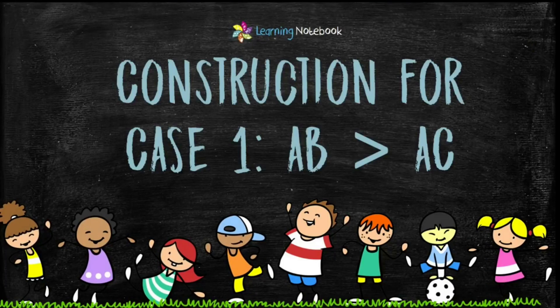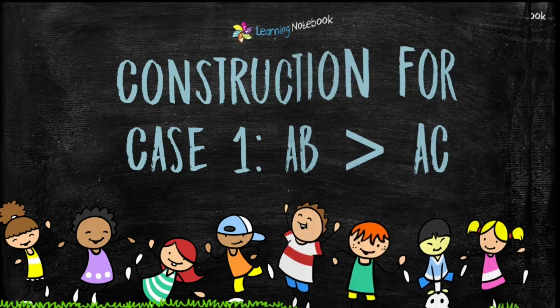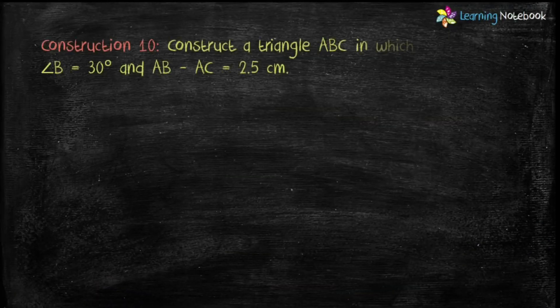So now let's start the construction for Case 1, when AB is greater than AC. The question is: construct a triangle ABC in which BC equals 5 centimeters, angle B equals 30 degrees, and AB minus AC equals 2.5 centimeters.